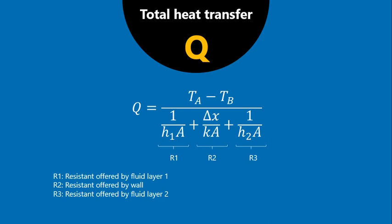Specifically, 1/H1A is the resistance offered by fluid layer 1, ΔX/KA is the resistance offered by the wall, and 1/H2A is the resistance offered by fluid layer 2. These three resistances R1, R2, R3 are offered by the system for heat transfer, driven by the temperature difference (Ta − Tb). Heat transfer equals driving force divided by total resistance.